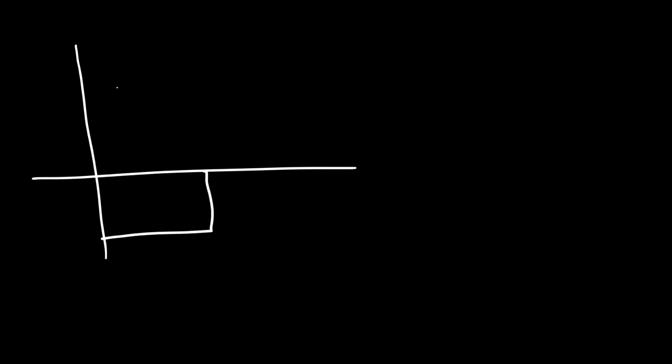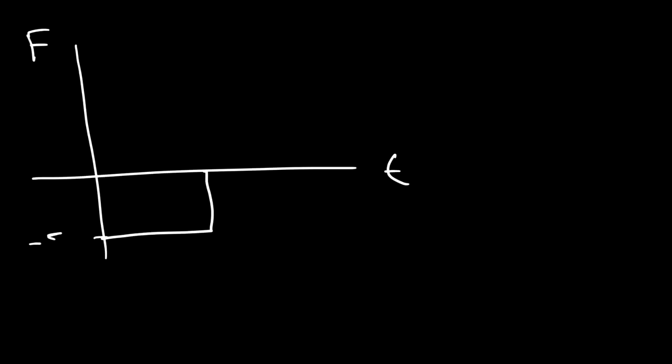If the area on a force-time graph is below the x-axis, the impulse will be negative. For example, a force of negative 50 newtons over 10 seconds gives an impulse of negative 500 newton-seconds.